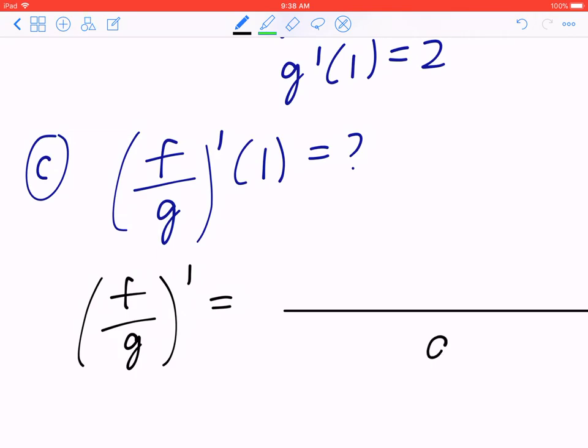Step 1, square the bottom. Step 2, copy the bottom to the top. Step 3, multiply by f prime minus the second last step, copy the top and the final step, multiply by g prime.